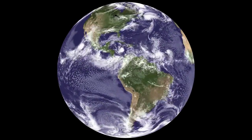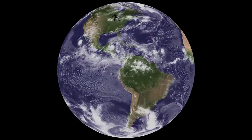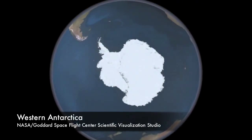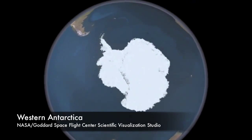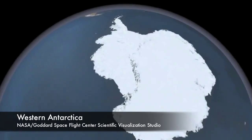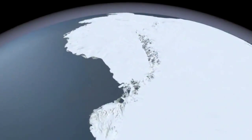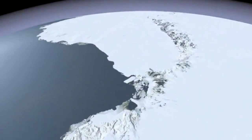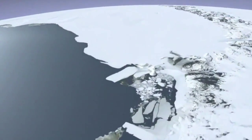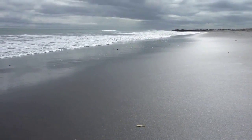The earth has undergone dramatic change over its geologic history. As the earth has cooled and warmed, ice fields have advanced and receded. During warming periods, ice melts and water expands, causing sea level rise.